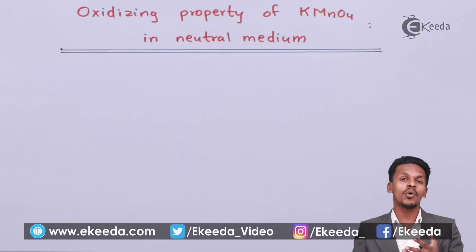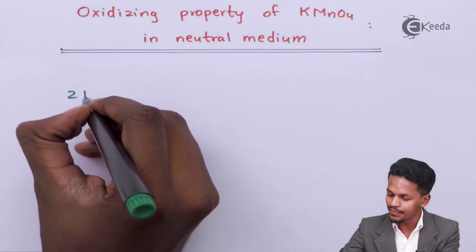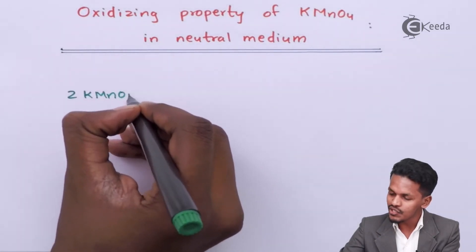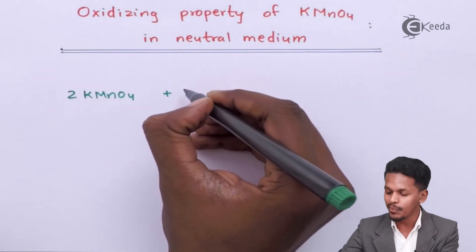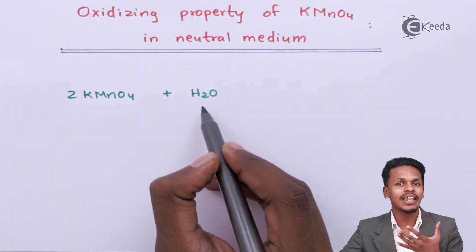So friends, now I am going to talk about the oxidizing property of KMnO4, that is potassium permanganate in neutral medium. In that case, suppose 2 moles of KMnO4 is dissolved in water. Obviously we understand that H2O is basically a neutral compound.